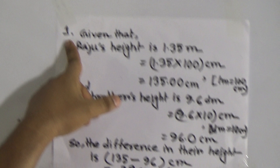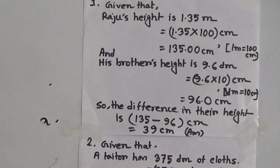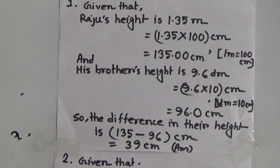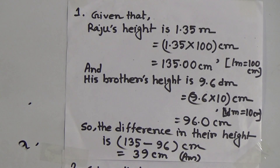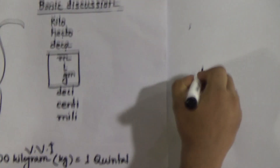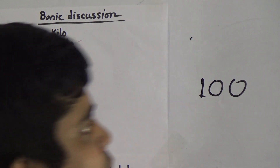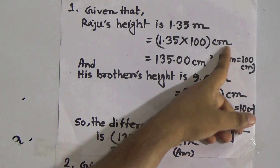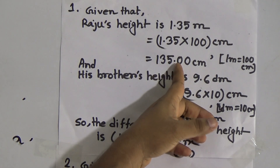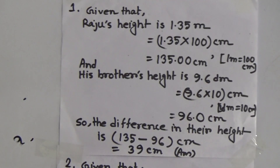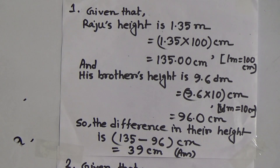Solution: Given that Raju's height is 1.35 meters. We need to convert meters to centimeters. One meter equals 100 centimeters — that is two steps on the chart, so we multiply by 100. Therefore, 1.35 multiplied by 100 equals 135 centimeters. Side note: 1 meter = 100 centimeters. So Raju's height is 135 centimeters.